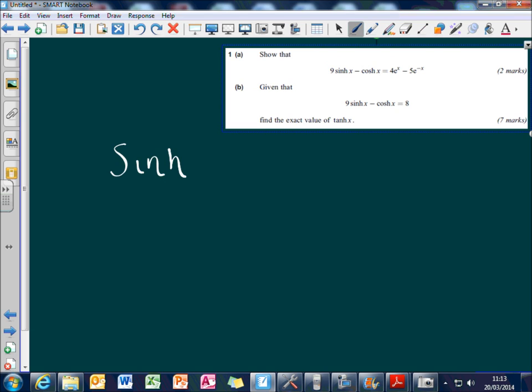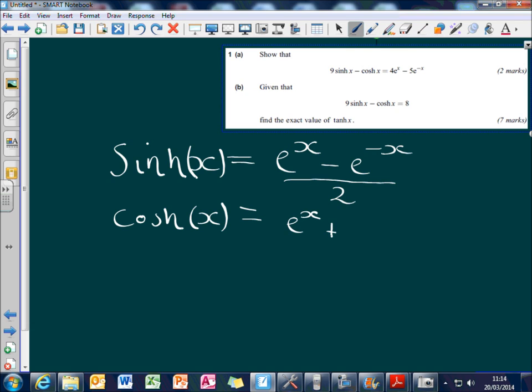sinh x equals e to the x minus e to the minus x all over 2, with cosh x equaling e to the x plus e to the minus x all over 2.